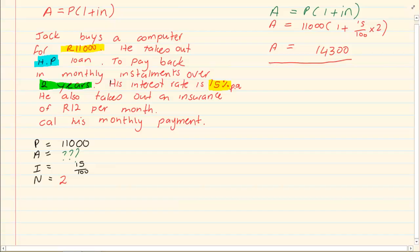So we now have A is equal to 14,300. What does that mean? That means that John is going to pay the company back 14,300. But now they had mentioned something specific. He is going to make monthly instalments.